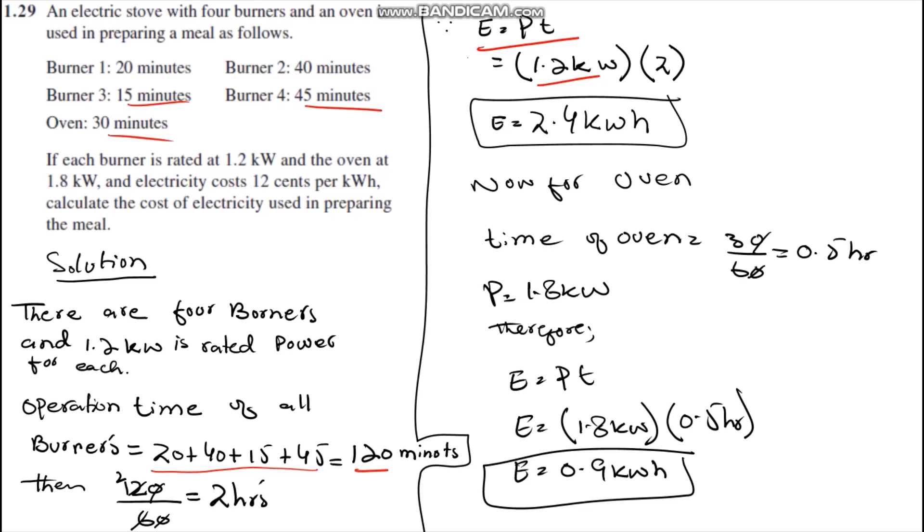It means these all burners from 1 to 4 consume the energy of 2.4 kilowatt hours.